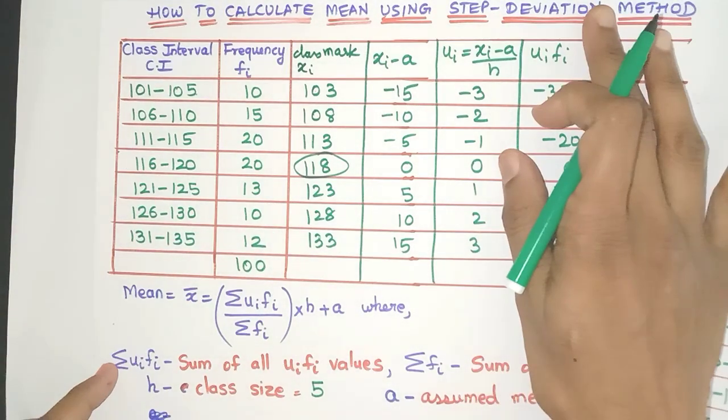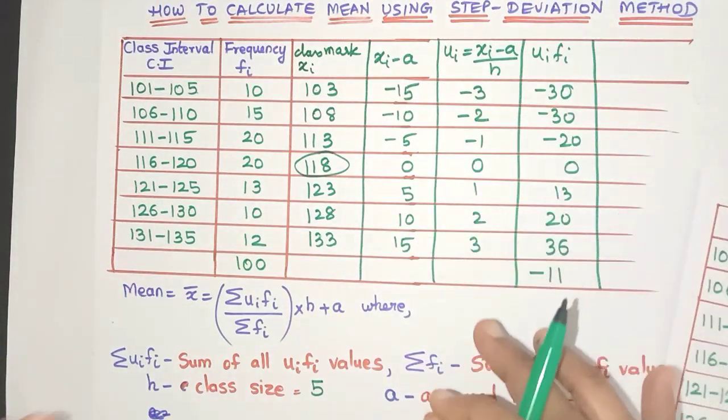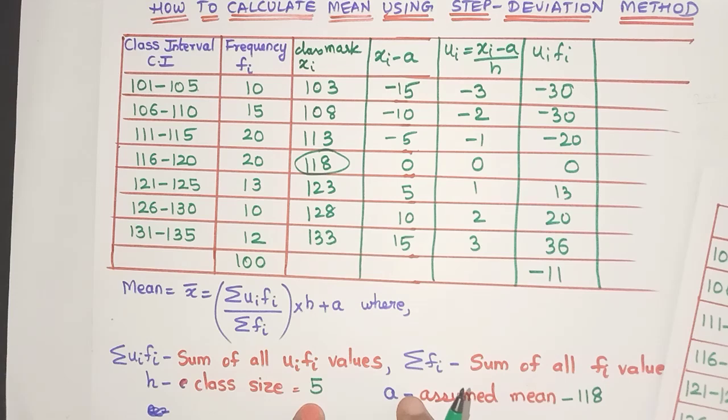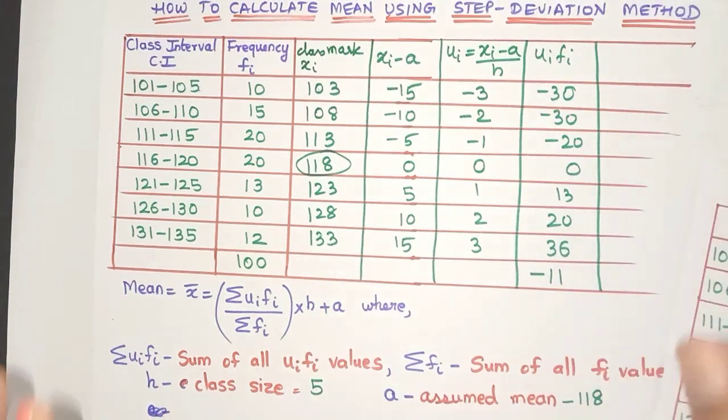But there is one limitation of step deviation. That is, xi minus a values which we got here should be perfectly divisible by the h value, that is the class size. Here it was perfectly divisible. That's why we use this method. Otherwise it will be difficult.